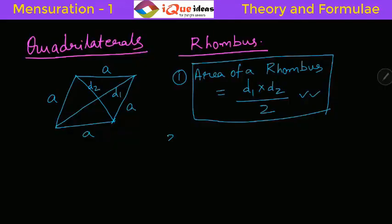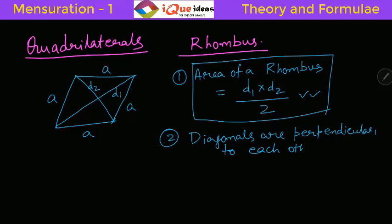There's one important property related to the diagonals: Diagonals are perpendicular to each other. The angle between the diagonals is 90 degrees.